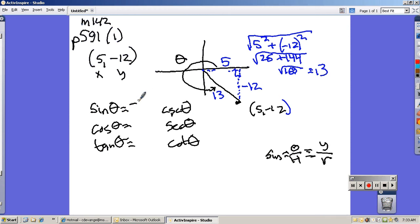So sine is opposite, or y over r. So sine will be -12/13. Cosine is adjacent, or x over r, so it's 5/13. Tangent is opposite over adjacent, or y over x, so it will be -12/5.